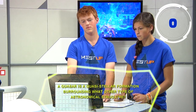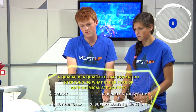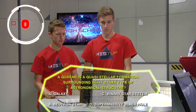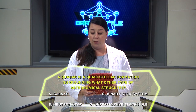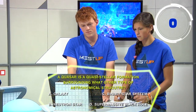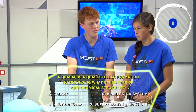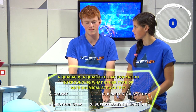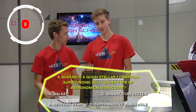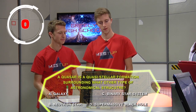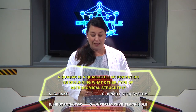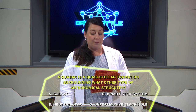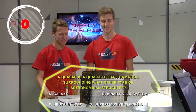Multiple choice: A, a galaxy; B, neutron star; C, binary star system; or D, supermassive black hole. Blue team answers B — incorrect. Red team answers A — that is also incorrect. The correct answer is D, supermassive black hole.